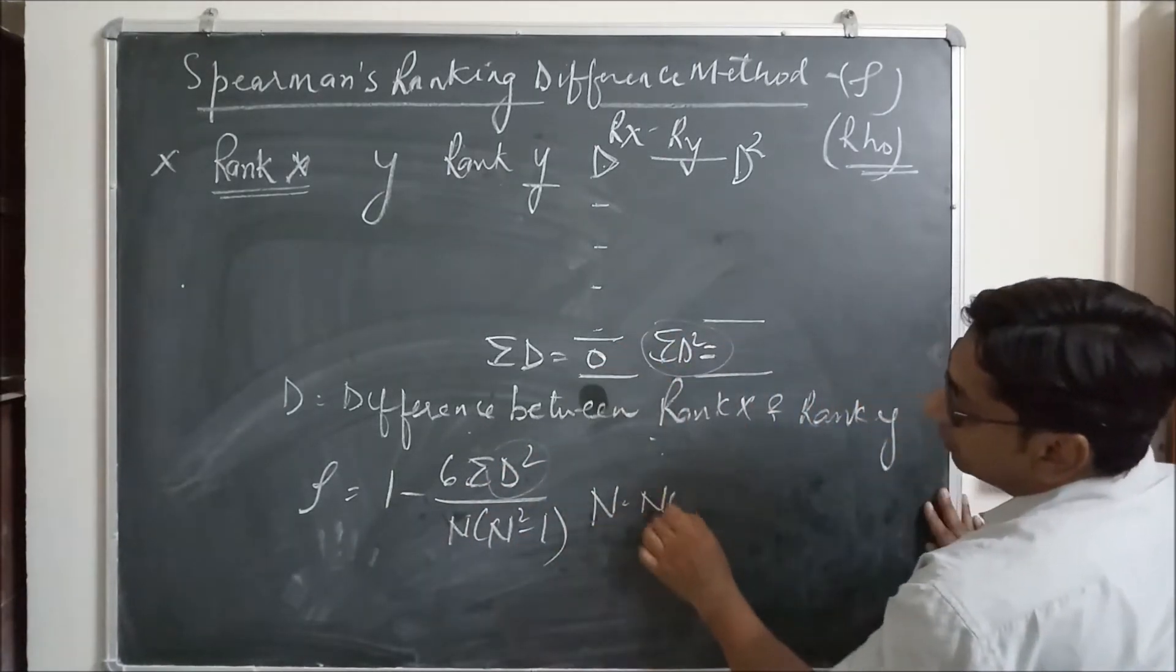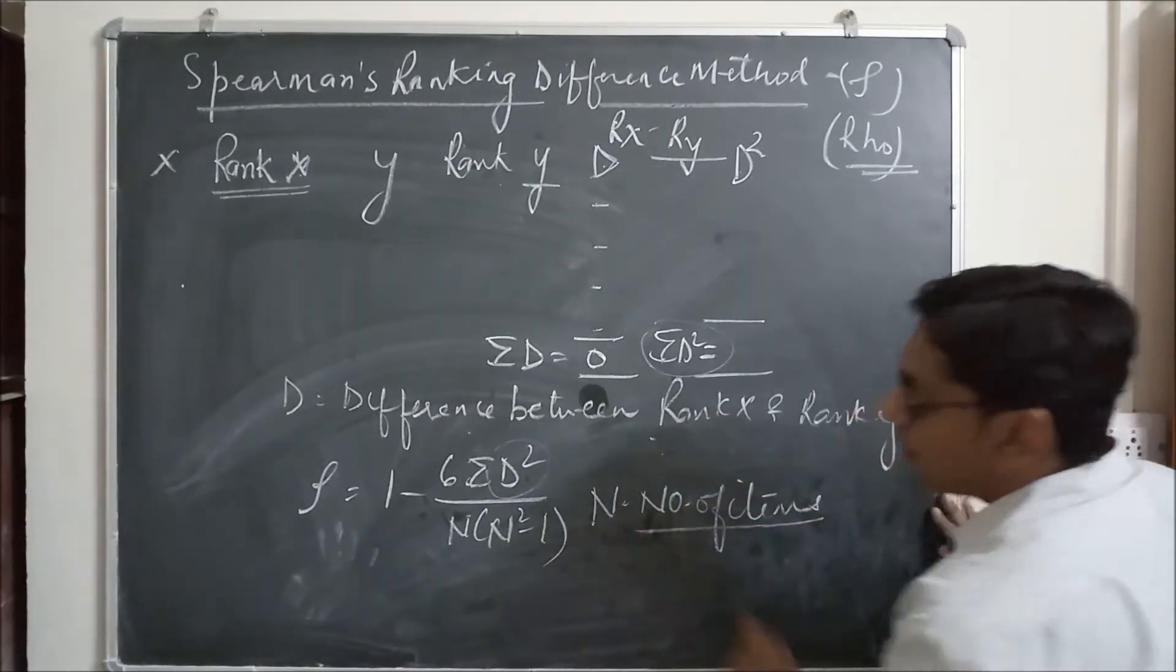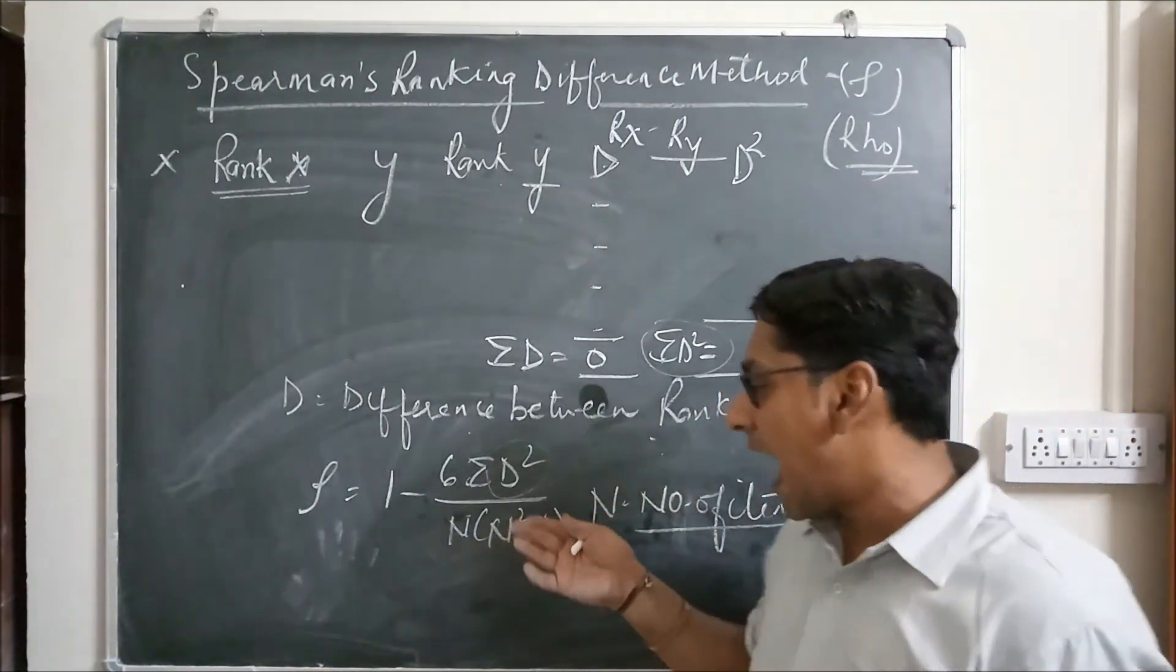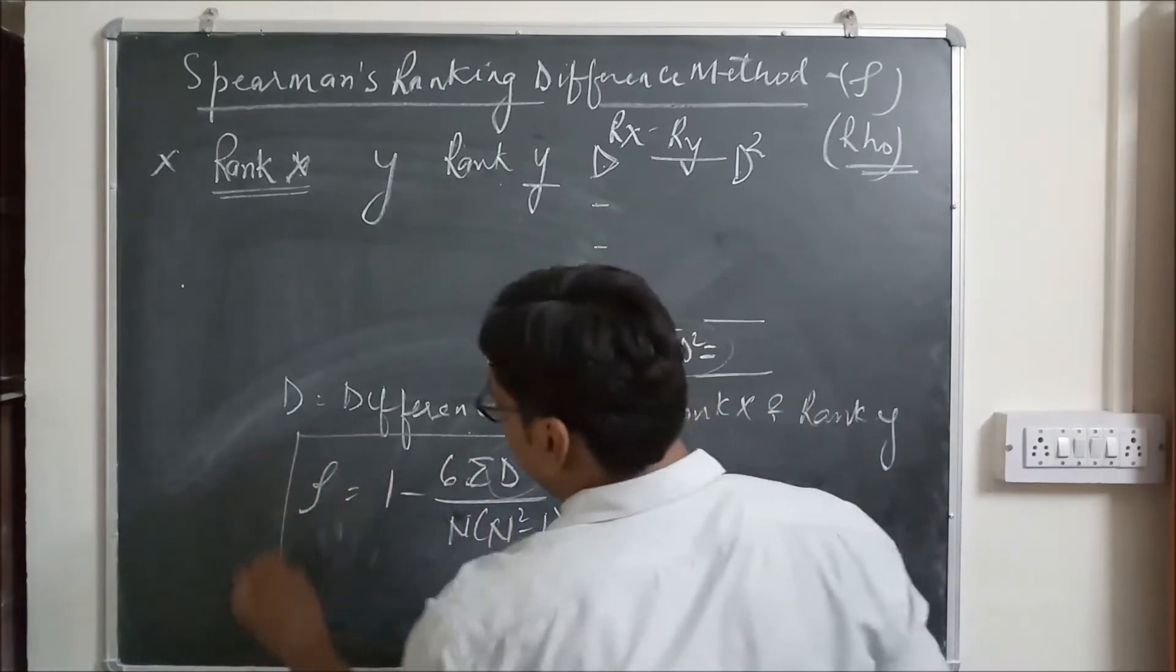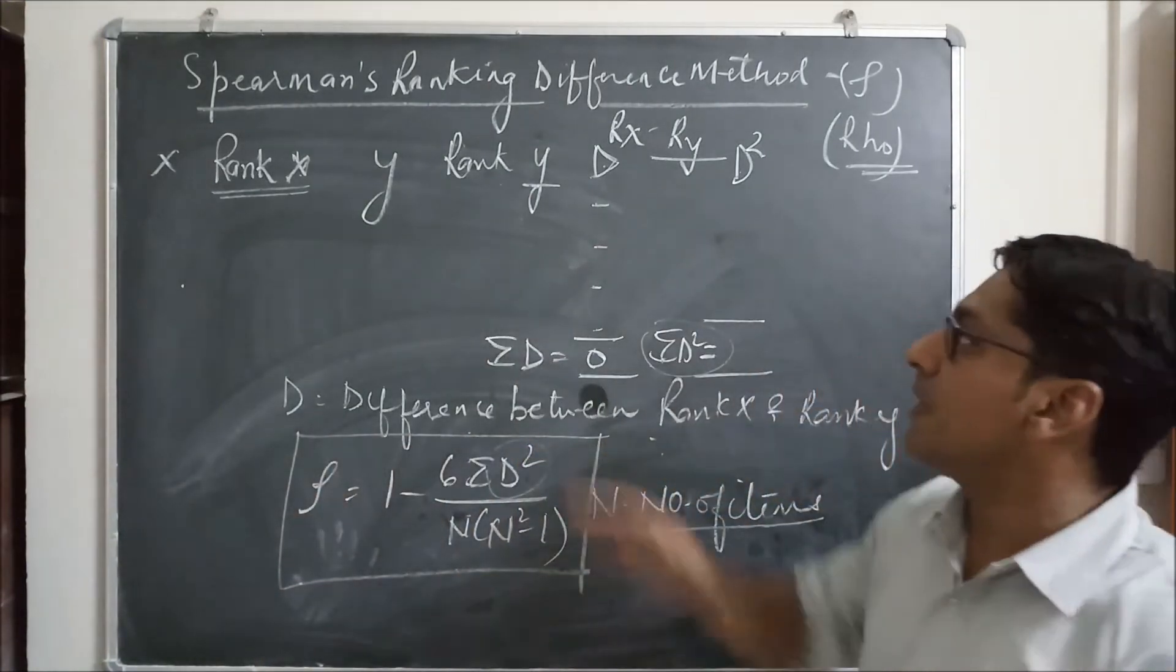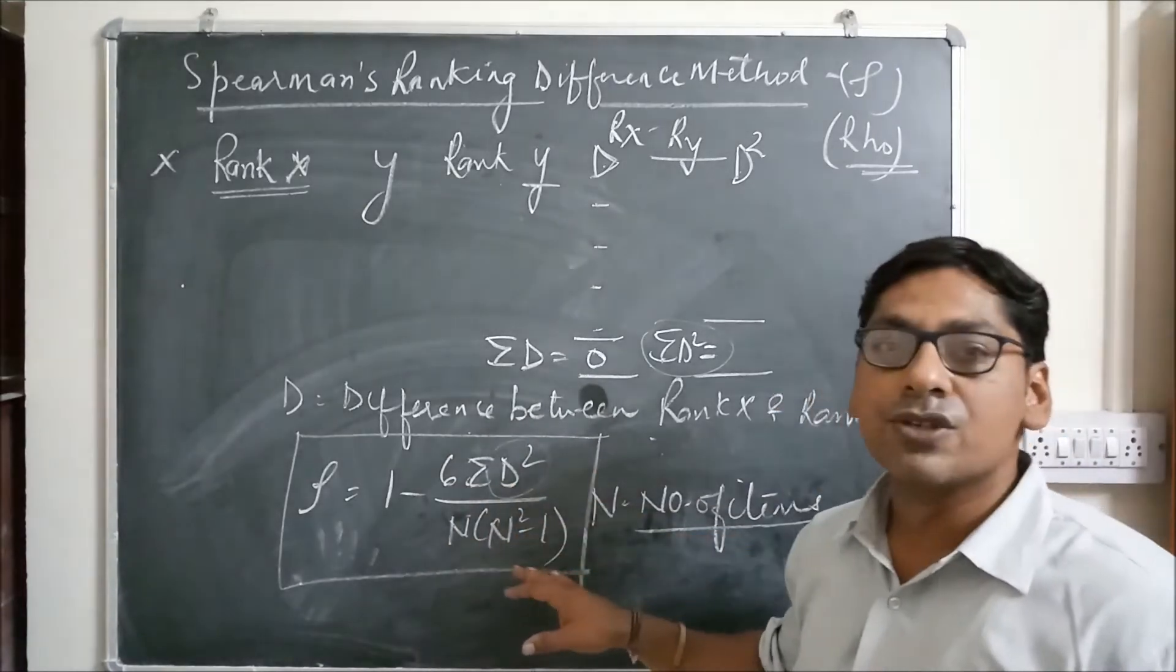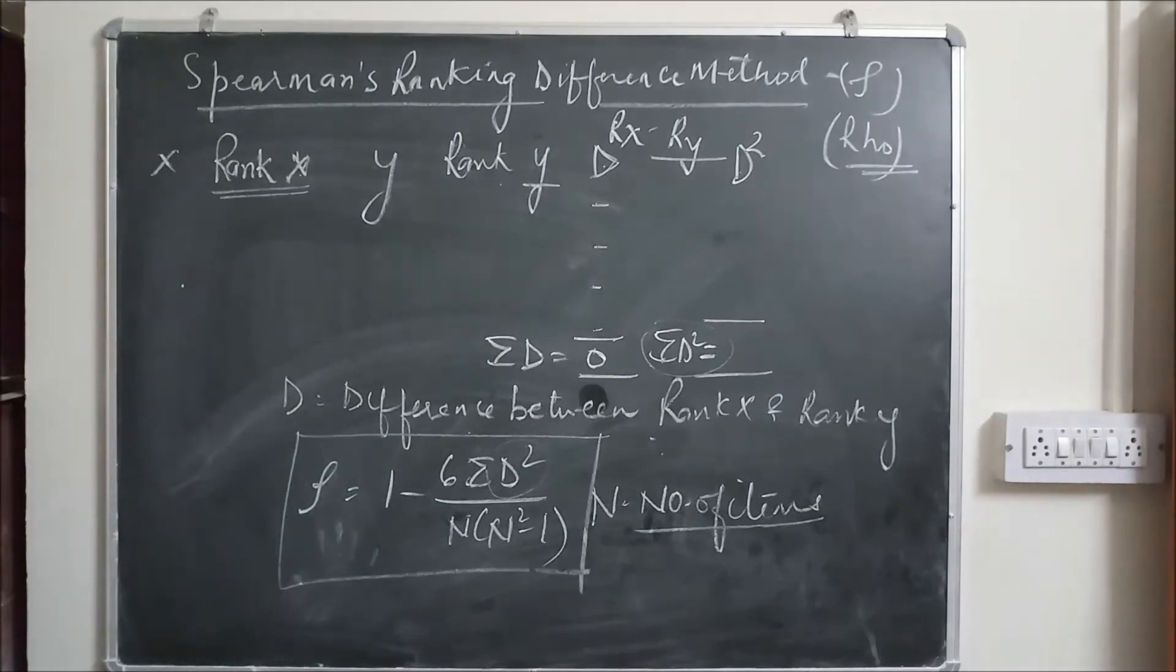D square is taken from here and N means number of items, number of observations. So this formula is used for the calculation of Spearman ranking difference method. Now let us see this with an example.